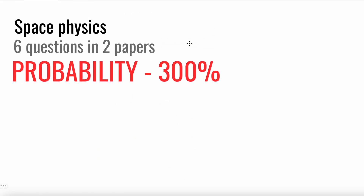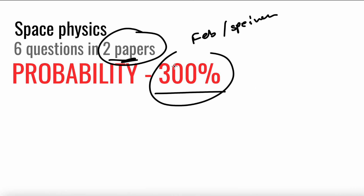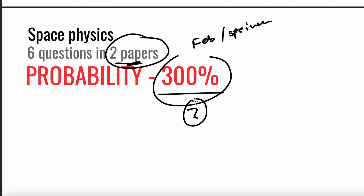The last topic is Space Physics. Since it's a new topic, only two papers were available — the February paper and the specimen paper — and an average of three questions are expected. You can check the syllabus guide for more detail on all topics mentioned, and do topical practice questions for each. That covers all the topic probabilities; next we'll look at the order of importance.